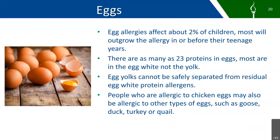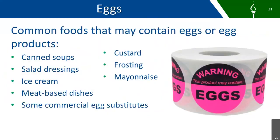Egg allergies affect about 2% of children. Most children will outgrow the allergy in or before their teenage years. There are as many as 23 proteins in eggs, and most of those proteins are in the egg white and not in the yolk. Egg yolks cannot be safely separated from residual egg white protein allergens, so people who are allergic to eggs should avoid them altogether. People who are allergic to chicken eggs may also be allergic to other types of eggs such as goose, duck, turkey, or quail. Some common foods that may contain eggs include canned soups, salad dressings, ice cream, meat-based dishes, some commercial egg substitutes, custard, frosting, and mayonnaise. This is not an exhaustive list — just some examples.